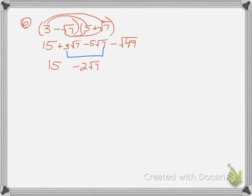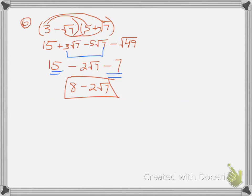I still have 15 out in front, so it's 15 minus 2 square root of 7, minus square root of 49 which becomes 7. Then 15 and negative 7 combine to give positive 8, minus 2 square root of 7. And that is my simplified form.